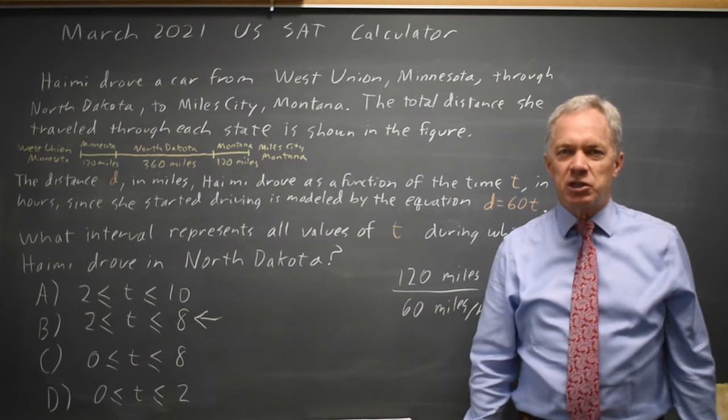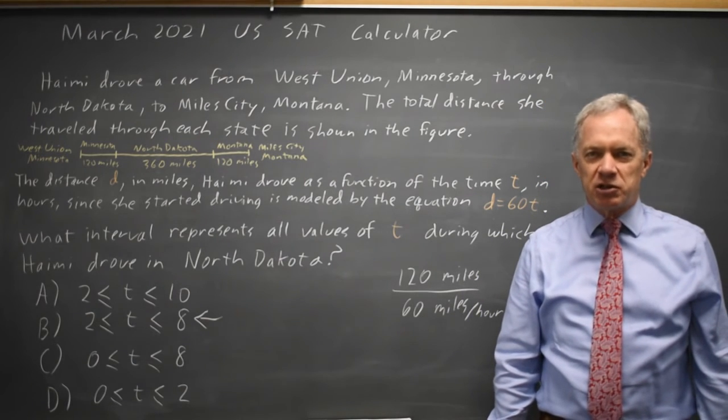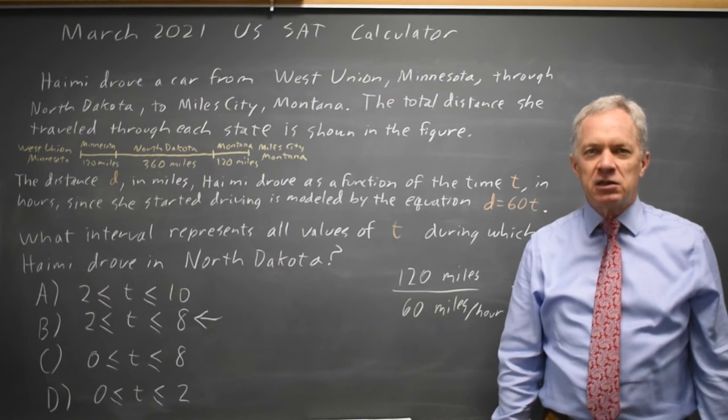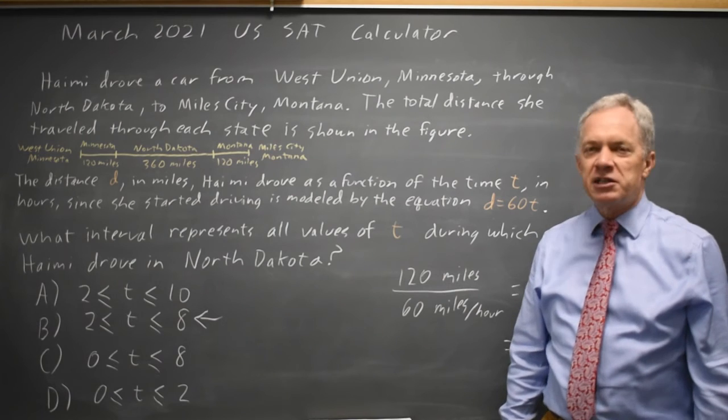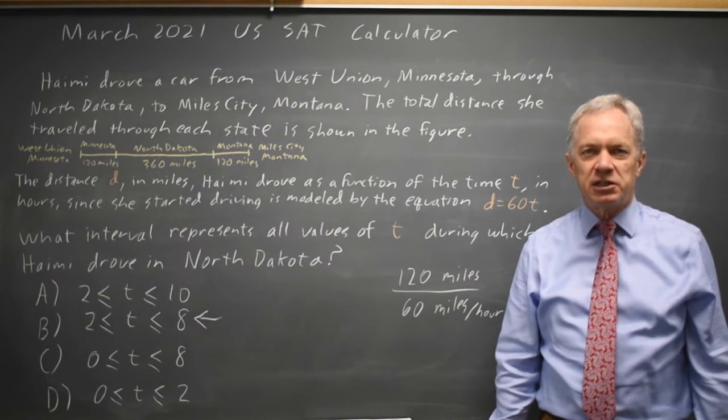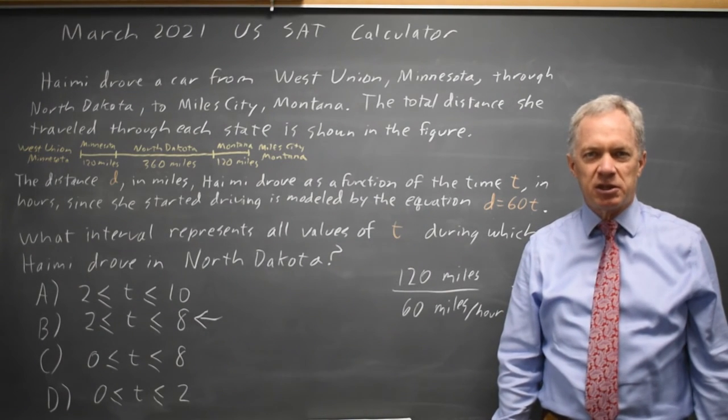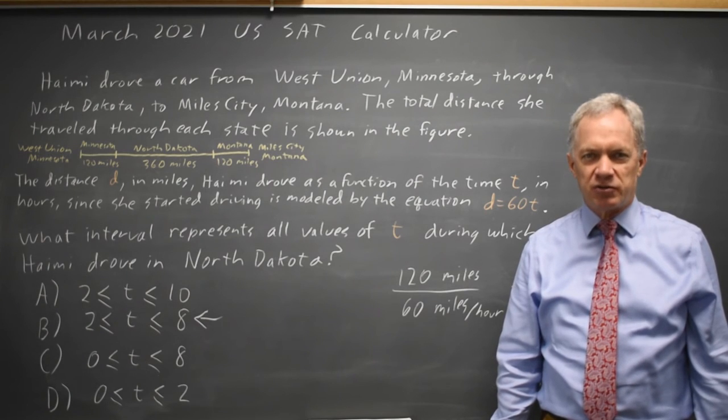The College Board will typically ask you to write or interpret an inequality in this manner. So make sure you pay attention to the exact words of the question and choose the interval they're asking about. In this case, they're asking about North Dakota, which is the middle interval.